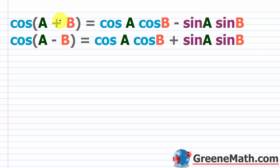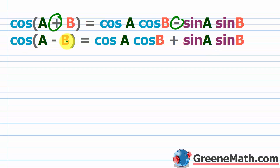You have to use the identity and say that the cosine of A plus B equals the cosine of A times the cosine of B minus the sine of A times the sine of B. Notice that for the difference identity, cosine of A minus B, the sign flips: it becomes cosine A times cosine B plus sine A times sine B. So the signs are different between the two formulas.